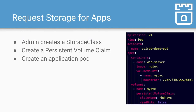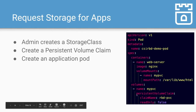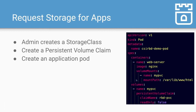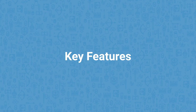Assuming Rook is set up with Ceph, what does it take to consume that storage? Just like any other storage platform, the admin first creates the storage class. After that, the application requests storage with the PVC, and then you create your application pod that mounts that volume. Here's an example pod showing the PVC being mounted into a demo web server. If you've done any storage in Kubernetes before, this should be very familiar — it's the same pattern used to plug in any other storage provider. Now I'll hand off to Sebastian to talk more about key features.